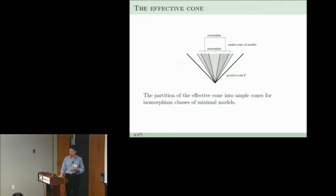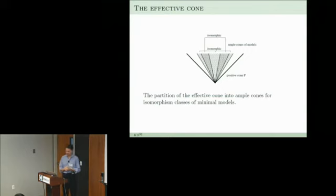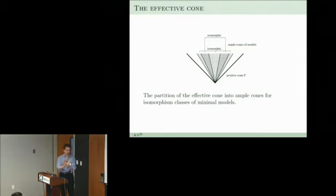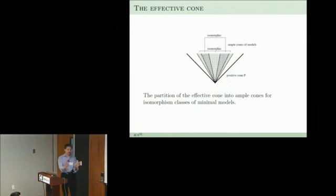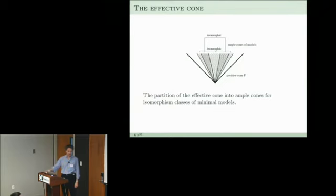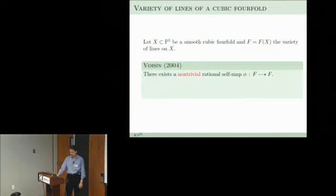There are actually two birational models we found, and the effective cone is partitioned into ample cones for these two models. At first you might think there are infinitely many birational models, but when you jump from one chamber to the next you get an isomorphic fourfold. That is the picture that emerges by looking at lattices and cones.